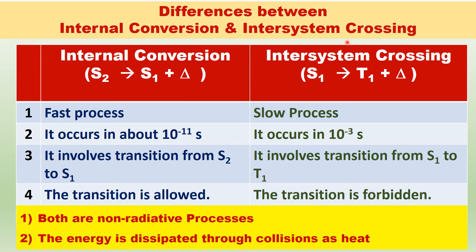There are two non-radiative processes: internal conversion and inter-system crossing. Internal conversion involves the transition from S2 to S1. Inter-system crossing involves the transition from the first excited singlet state to the triplet state.